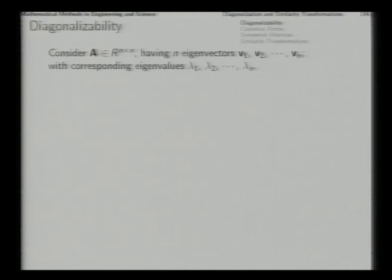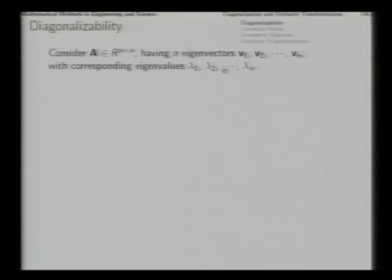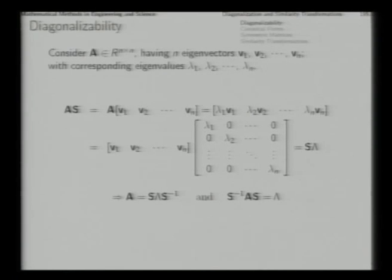Consider an n by n matrix which has n linearly independent eigenvectors v1 to vn with corresponding eigenvalues lambda1 to lambda_n. Some of these may be repeated — lambda2 and lambda3 can be equal, they need not all be different. These are all linearly independent; only then will we talk about n different eigenvectors. If we pack all n eigenvectors into one n by n matrix with these vectors as columns, we denote it by S and examine the product AS.